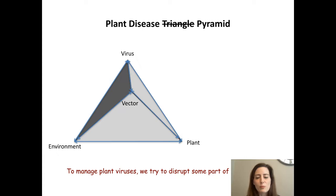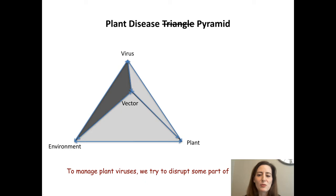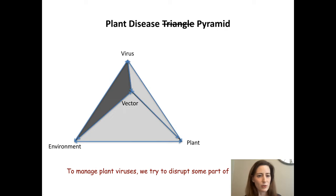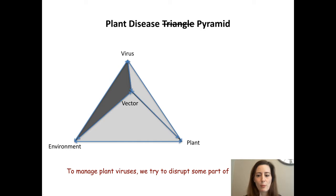I'm going to introduce a concept that is really basic to plant pathologists, which is the plant disease pyramid. Plant pathologists have known for a long time that a pathogen — in the cases I'm talking about, viruses — interacts with their plant hosts and with the environment. When all of the factors converge in a manner that is conducive for disease, we see the disease. Most plant viruses are transmitted by arthropod vectors, which are mobile and move viruses from plant to plant. To manage plant viruses, we try to disrupt some part of the pyramid.